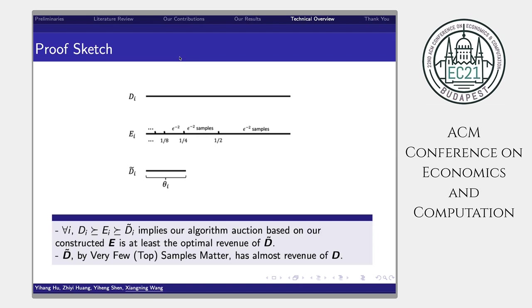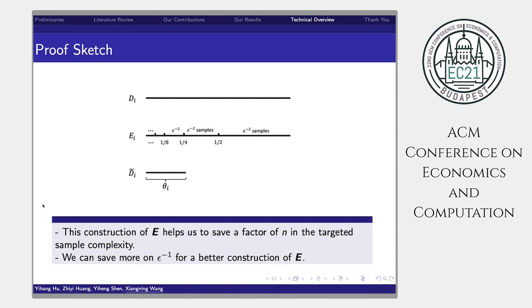In this method, our construction of e helps us to save a factor of n in the targeted sample complexity compared with the IID sample complexity. Further, in our paper, we show that we can save more on epsilon factor for a better construction of e.